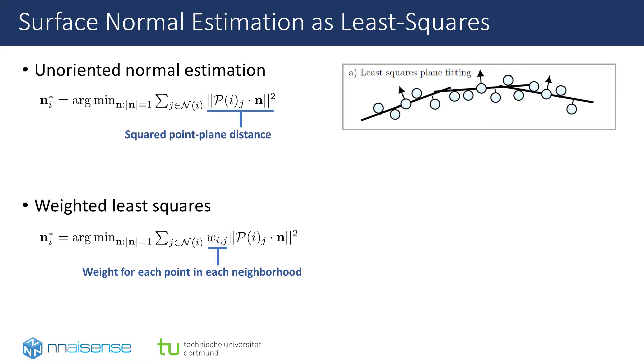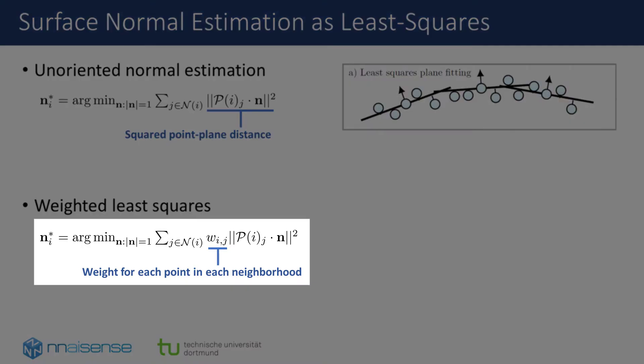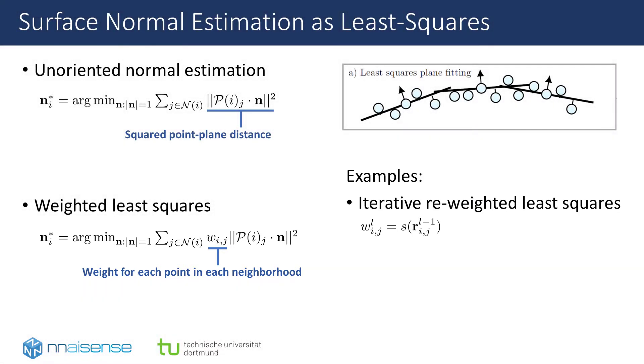Both of these issues can be addressed by introducing appropriate weights in local neighborhoods, leading to a weighted least squares problem. Each point pair ij within a certain neighborhood size of each other can be weighted individually.